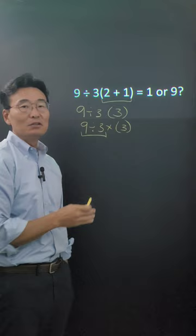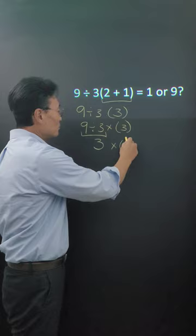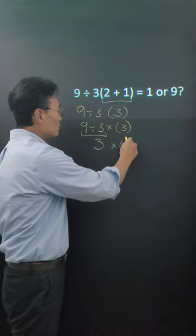So if we go 9 divided by 3, we get 3 times 3, giving us a final answer of 9 as our final correct answer.